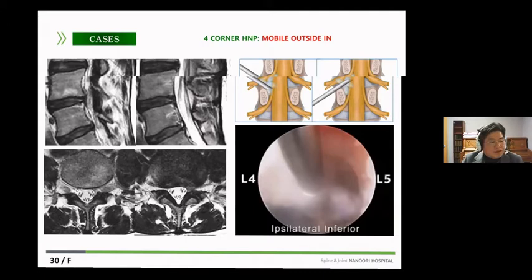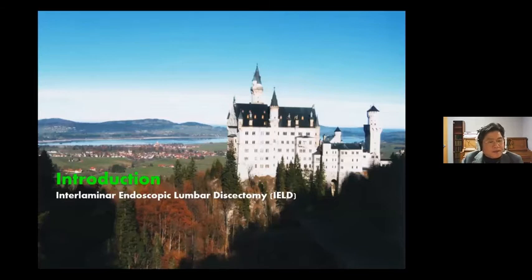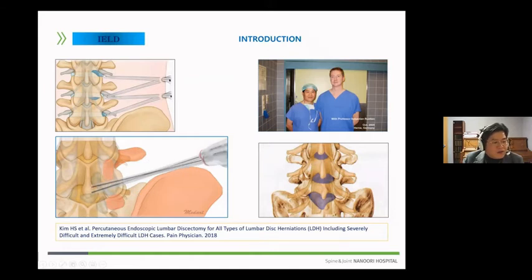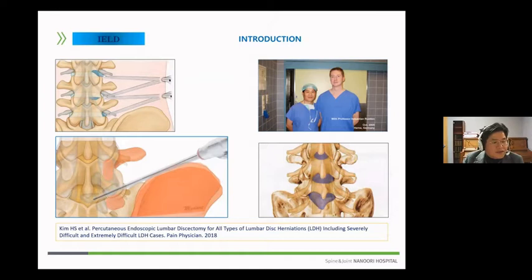Let's look at interlaminar endoscopic lumbar discectomy. Currently, full endoscopic lumbar discectomy can be approached for almost all cases. A transforaminal approach is possible in almost all areas. Of course, transforaminal endoscopic lumbar discectomy is also possible in many cases of L5S1. But at the L5S1 level, the transforaminal approach has many limitations in accessing the target point when degenerative changes have progressed. Fortunately, the L5S1 level has a wide interlaminar space, which led to the development of interlaminar endoscopic lumbar discectomy.